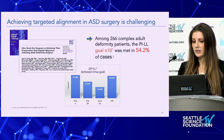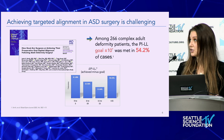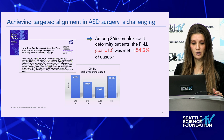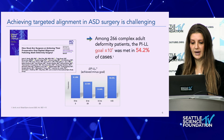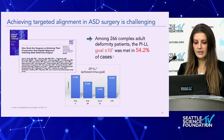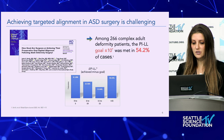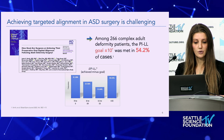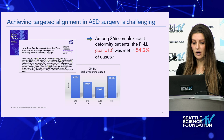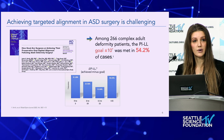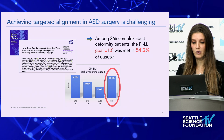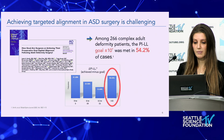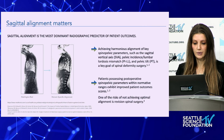Achieving target alignments in ASD surgery is actually challenging. Of patients who have had spine surgery with state-of-the-art spine surgeons from AO Spine and ISSG, the PILL goals have only been met in a very small percentage. Specifically, 0 to 5 degrees was achieved in 31.5 percent, and we are misaligning by more than 15 degrees in almost the same number — 30.45 percent. Among 266 complex adult spine patients, the goal was met in only 54.2 percent of cases.